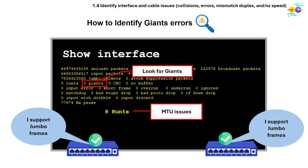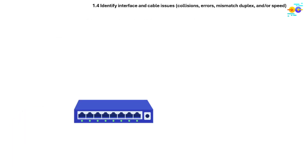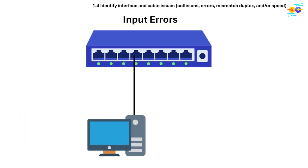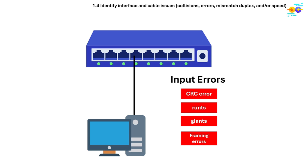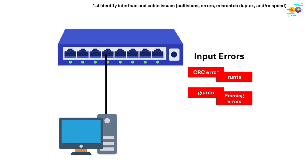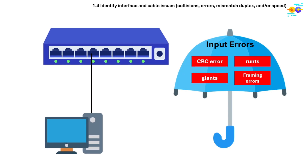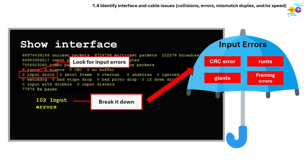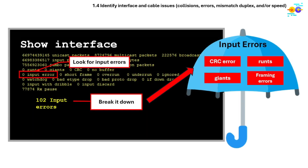Input errors is a generic counter and an umbrella term that includes many types of receive errors such as CRC errors, giants, runts, and framing errors. If this counter is high, break it down by checking the CRC, frame errors, runts, or other specific counters.